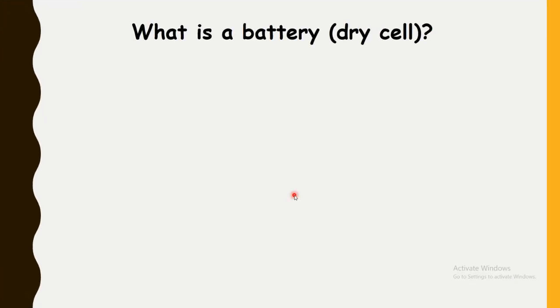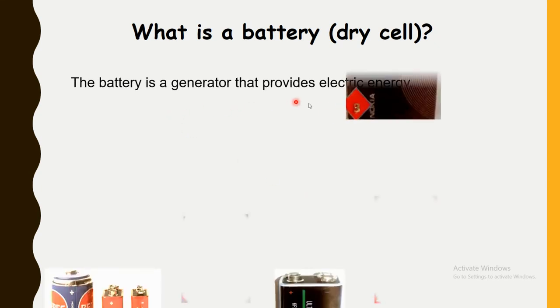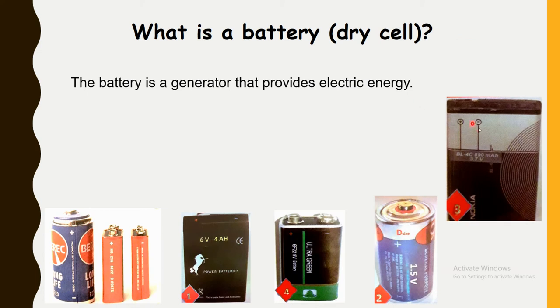What is a battery or a dry cell? The battery is a generator that provides electric energy. These pictures represent dry cells or batteries. All these dry cells have positive and negative poles. This one has a positive and a negative pole.